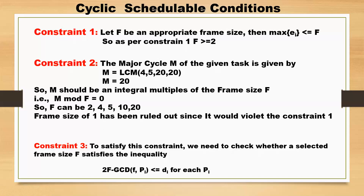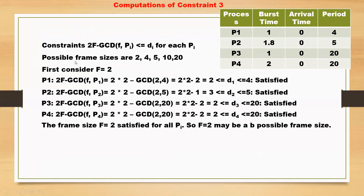We test the condition 2f minus GCD(f, Pi) less than or equal to Di for each Pi and each frame size. The possible frame sizes are 2, 4, 5, 10, and 20. First consider f equal to 2. For P1: 2×2 minus GCD(2,4) = 4 minus 2 = 2, which is less than or equal to D1=4. Satisfied. For P2: 2×2 minus GCD(2,5) = 4 minus 1 = 3, which is less than or equal to D2=5. Satisfied.